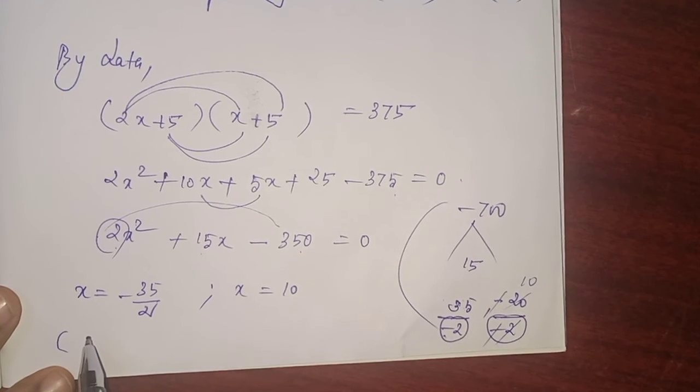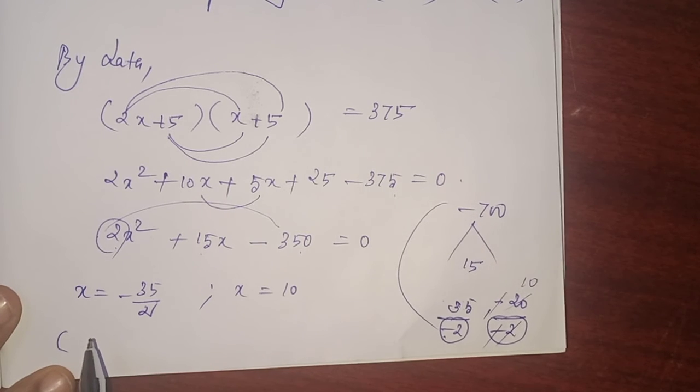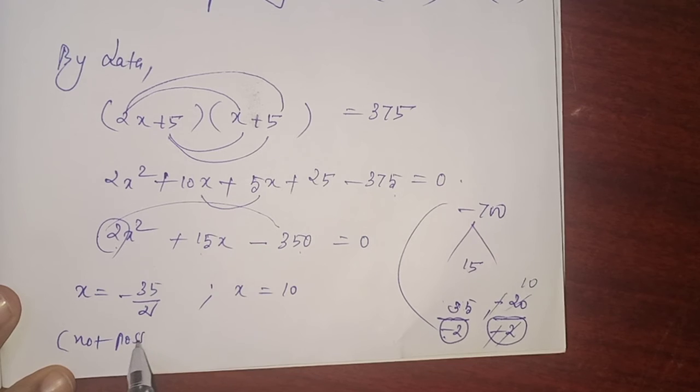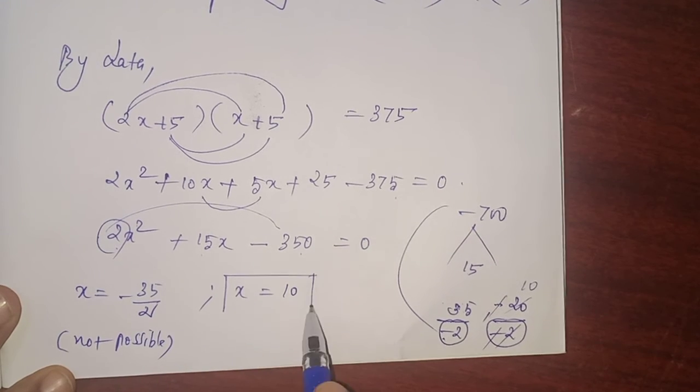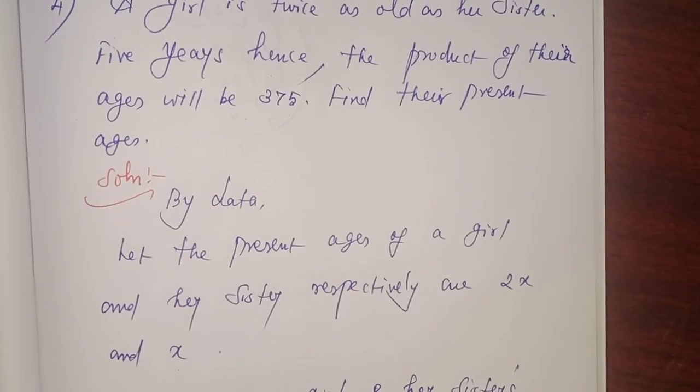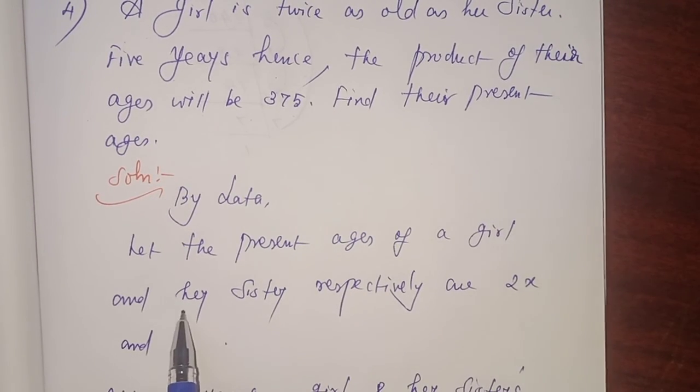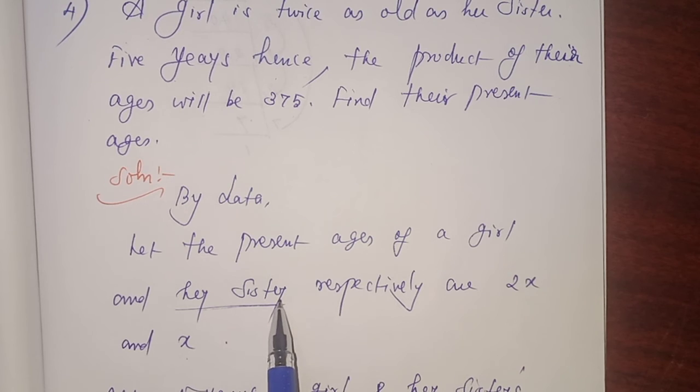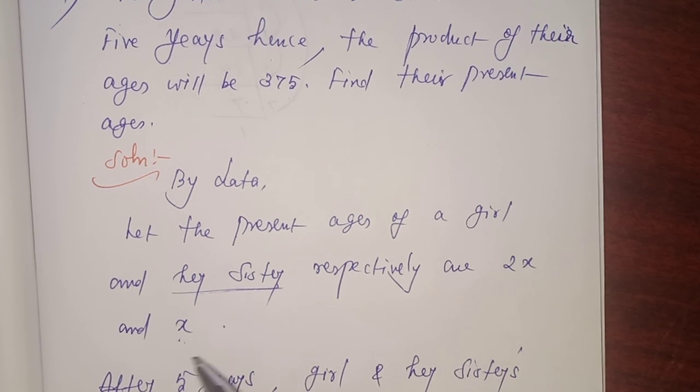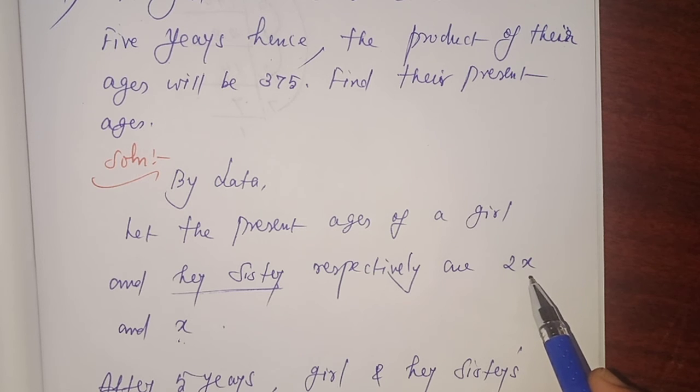x refers to age. For this problem, x refers to age. Age cannot be negative. Therefore, this is not possible. Now, x value is 10. Which one we considered x? X is the sister's age. X value is 10. Therefore, girl's age will be 2 into 10, that's 20.